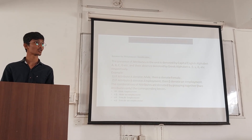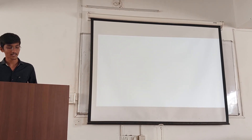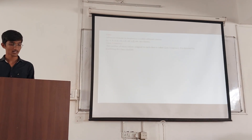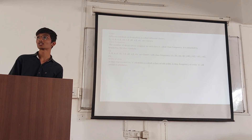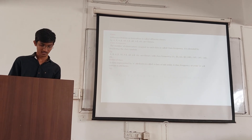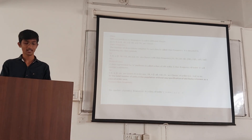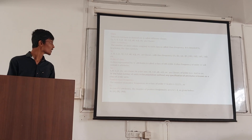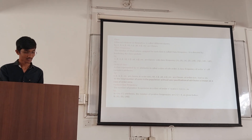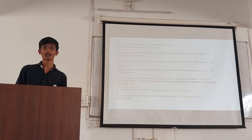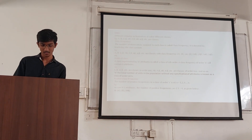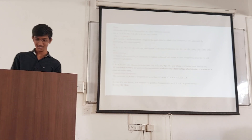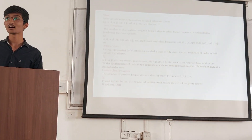Example: if attribute A denotes male, then alpha denotes female. If attribute B denotes employment, then beta denotes unemployment. The combination of attributes is denoted by grouping the corresponding letters: AB may denote employed male, A-beta may denote unemployed male, alpha-B may denote employed female, and alpha-beta may denote unemployed female.